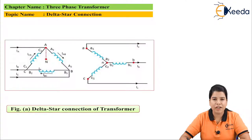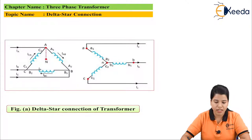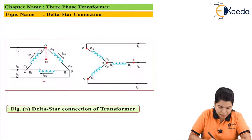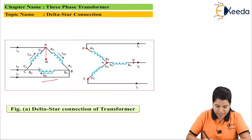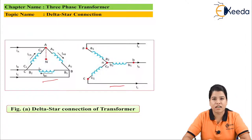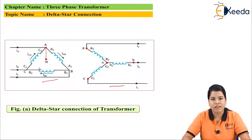The figure shows the diagram for the delta-star connection. If we see carefully, the primary winding is connected in delta whereas the secondary winding is connected in star. When the two windings are connected in delta and star, their voltage and current relations will also change. The phasor diagram for the same can be shown in the figure.